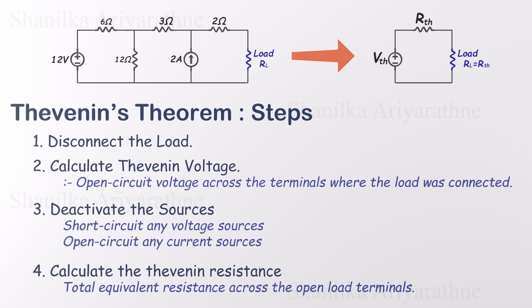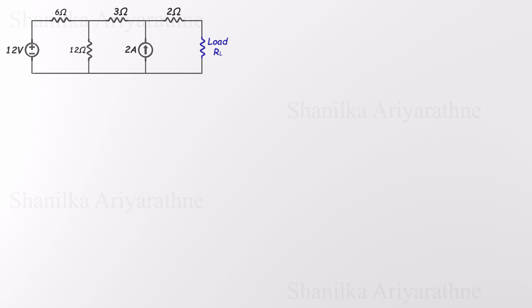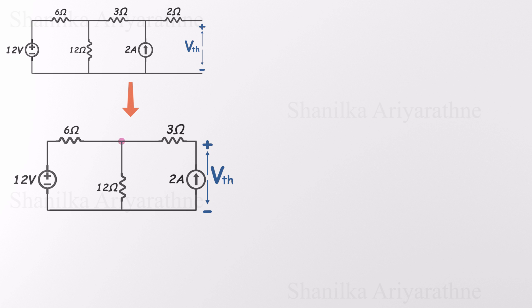And now, let's solve the problem. First, to find the Thevenin voltage, we start by disconnecting the load and identifying the two open terminals. Now, since that branch is open, there's no current flowing through the 2-ohm resistor, so we can safely ignore it for now. Let's apply Kirchhoff's laws to find VTH. We'll start by labeling the node currents. The 2-amp current source is pushing 2 amps into the node. Let's call the other two branch currents I1 and I2. Using Kirchhoff's current law at the node, the current going in equals the current going out. That gives us our first equation.